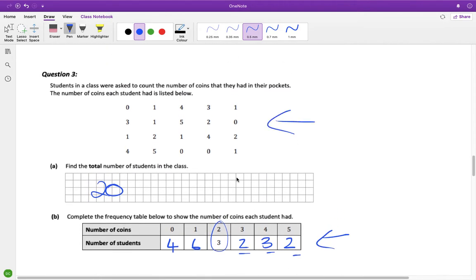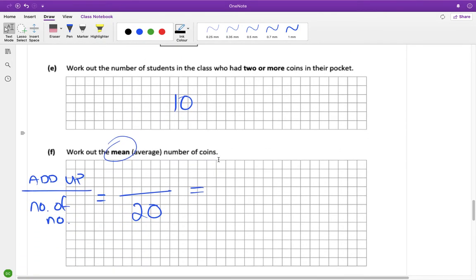So you add up zero plus one plus four plus three plus one plus three plus one plus five plus two plus zero plus one plus two plus one plus four plus two plus four plus five plus zero plus zero plus one. When you add all them up you get 40.